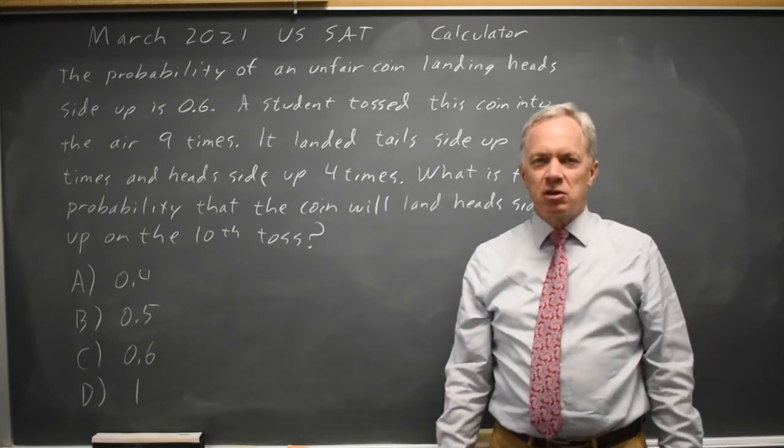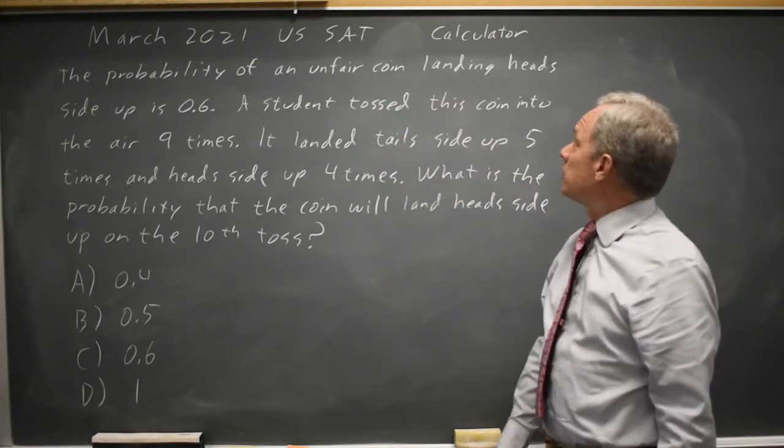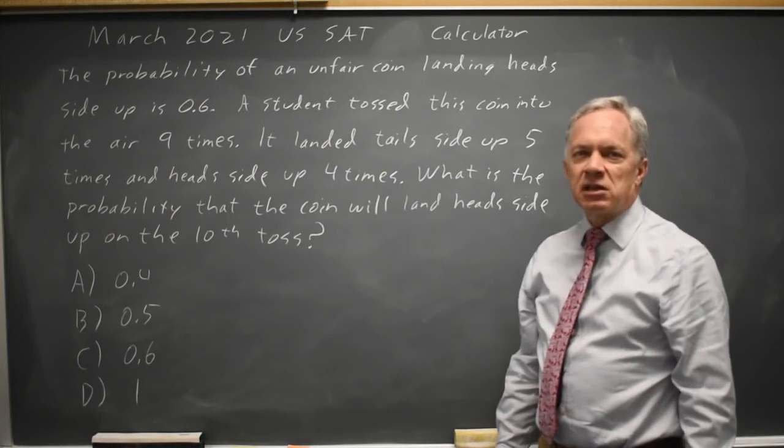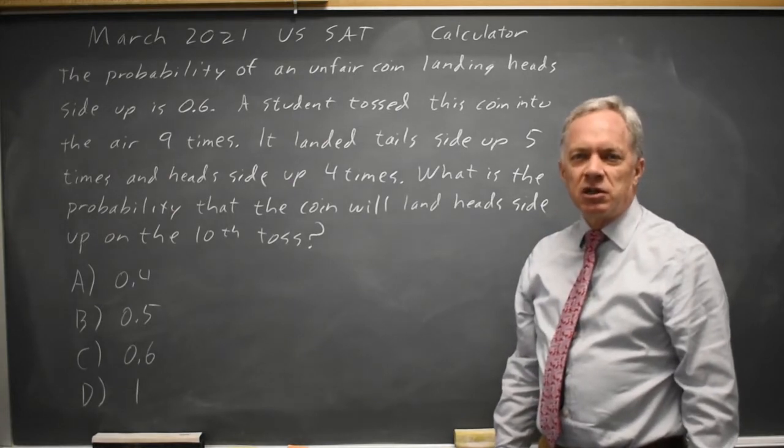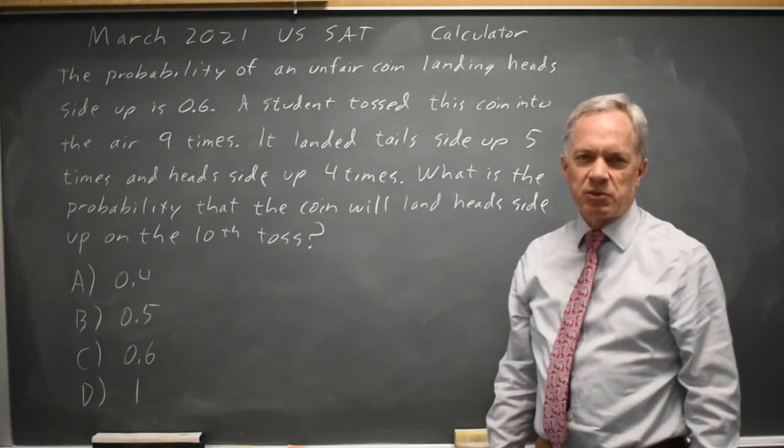The College Board describes a coin that they say is unfair and the probability of landing heads is 0.6. That means that in the long run, or a very large number of trials, about 60% of all tosses will come up heads.